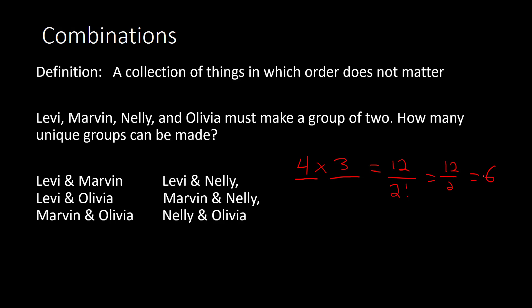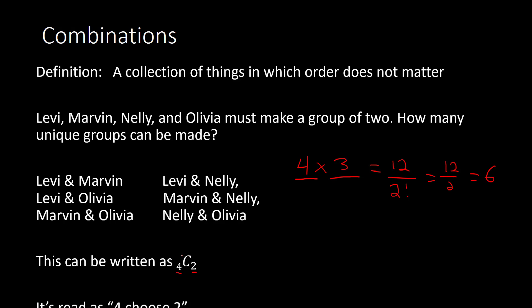Just like with permutation, there is a quick way to write this, and that is by using the letter C. The four means we have four people to choose from, and two means we're picking two people at a time, and the C means combination. That is just like permutation — the only difference is permutation has a P, combination has a C. We can read this in English as 'four choose two.'